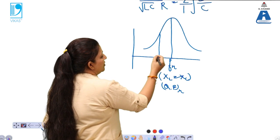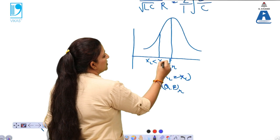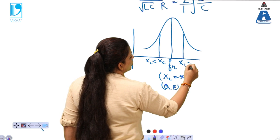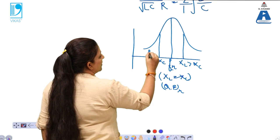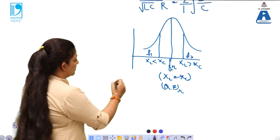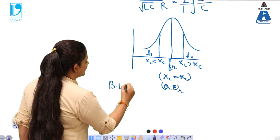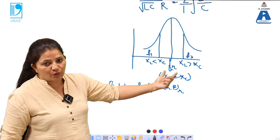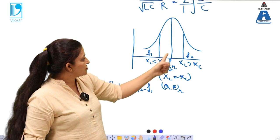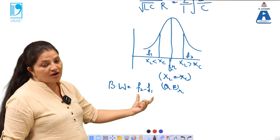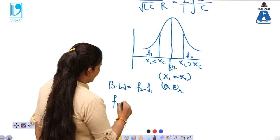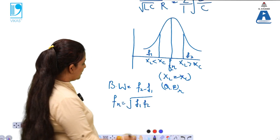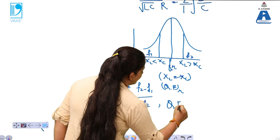On the left side of FR at any point F1, XL is less than XC. On the right side at any point F2, XL is greater than XC. The bandwidth is given by F2 minus F1. FR is the resonance frequency where the peak is maximum. The resonance frequency FR can also be calculated as the square root of F1 times F2. These are the key terms used to solve numerical problems.